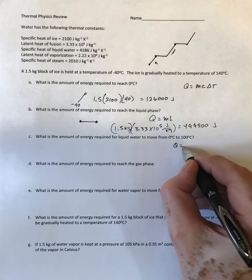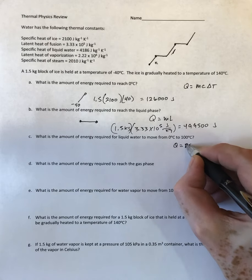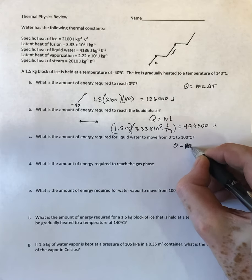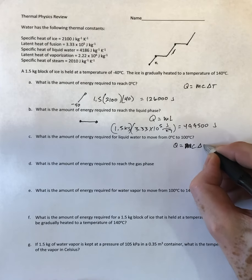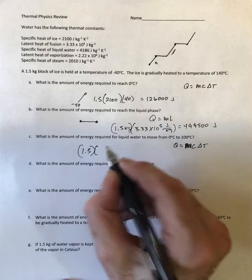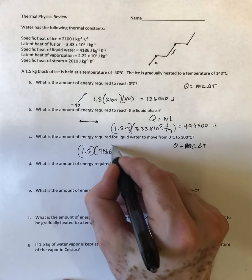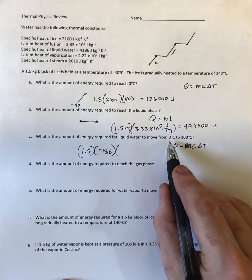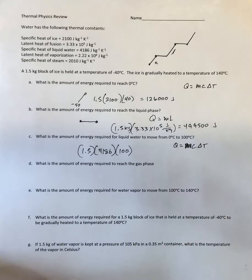So mass times specific heat times temperature. My mass is 1.5 same as before, specific heat is 4186, and change in temperature since it's going from 0 to 100 is 100 degrees Celsius or 100 Kelvin whichever you would prefer.